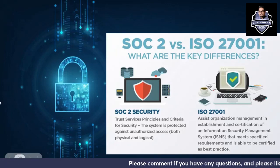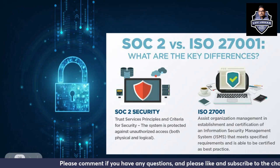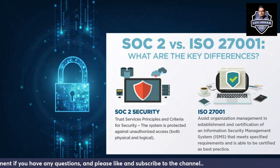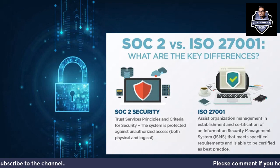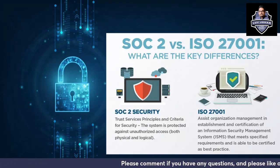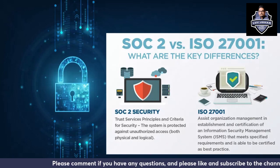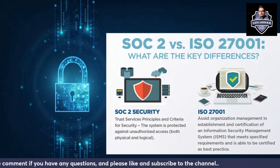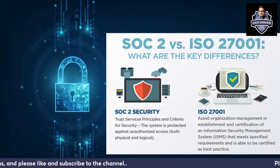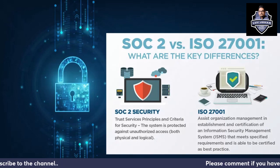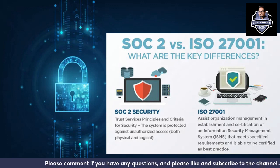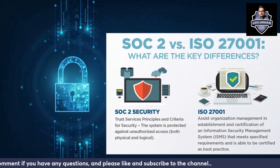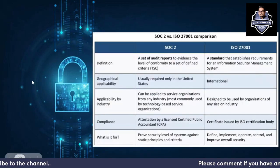SOC 2 is basically relying on Trust Services Principles and Trust Services Criteria. The system is protected against unauthorized access — both physical and logical — under SOC 2 security. There are five different categories of Trust Services Principles. ISO 27001, on the other hand, is basically an Information Security Management System, so that you follow best practices in your organization in terms of information security.